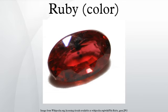The ruby-throated hummingbird is a small hummingbird. It is the only species of hummingbird that regularly nests east of the Mississippi River in North America. Infrared light in the portion of the spectrum where it is still visible to humans appears ruby-red. Starting at about 660 nm in the visible red, a monochromatic source such as an LED or laser begins to look very slightly purplish, gradually becoming more so as the wavelength increases. Below about 900 nm, the color is more purple than red.